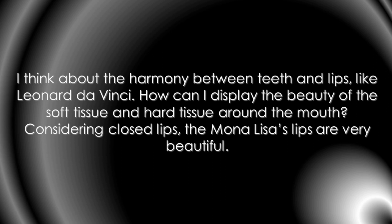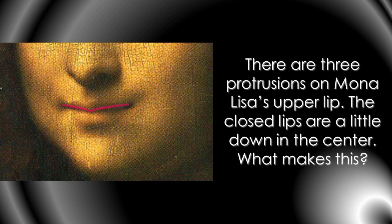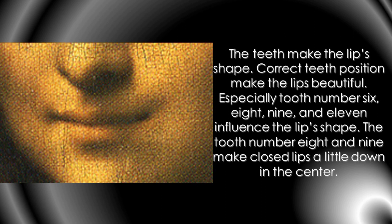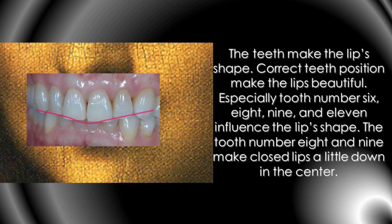Considering closed lips, Mona Lisa's lips are very beautiful. There are three protrusions on Mona Lisa's upper lip. The closed lips are a little down in the center. What makes this? The teeth make the lips' shape. Correct teeth position makes the lips beautiful. Especially tooth numbers 6, 8, 9, and 11 influence the lip shape. Tooth numbers 8 and 9 make the closed lips go a little down in the center.